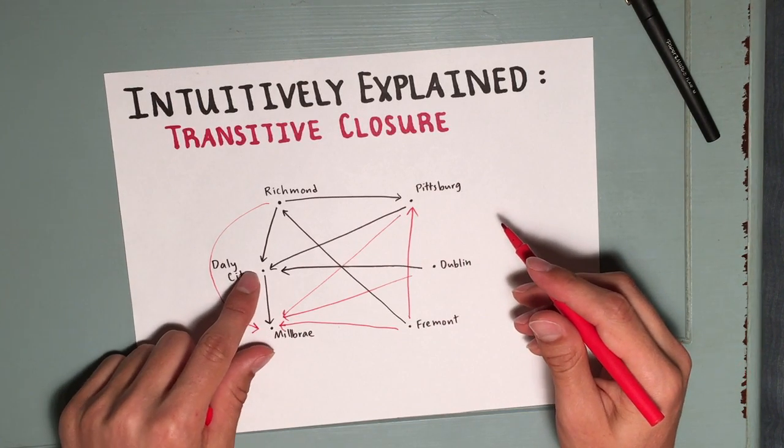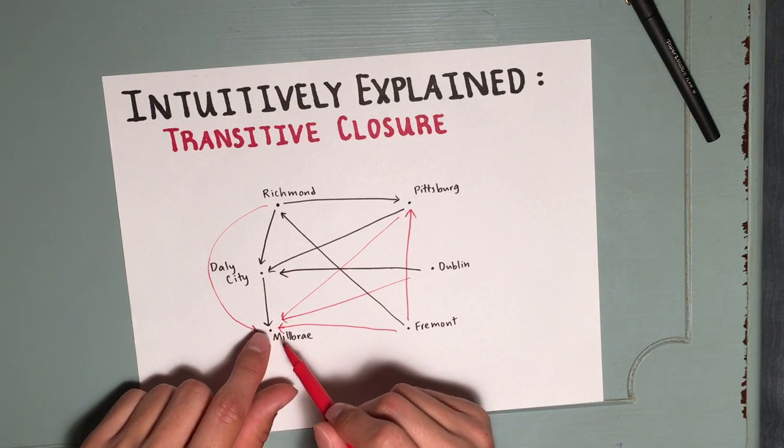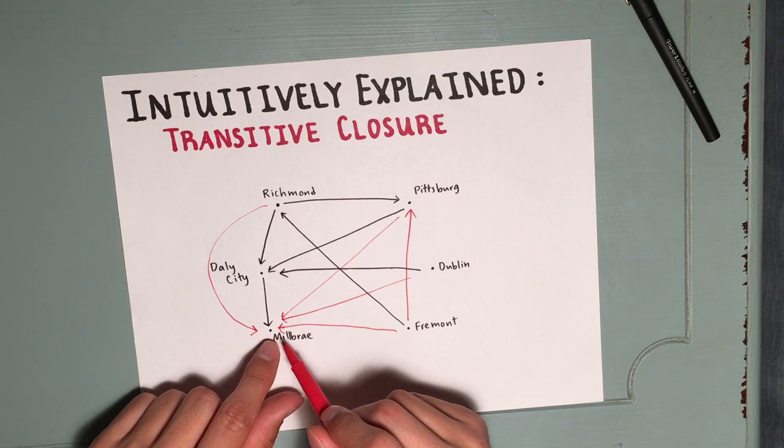That's it. From Daly City, we can only go to Millbrae, but then Millbrae doesn't go anywhere, so we don't add anything else. And from Millbrae, we can't go anywhere, so we don't need to add anything.